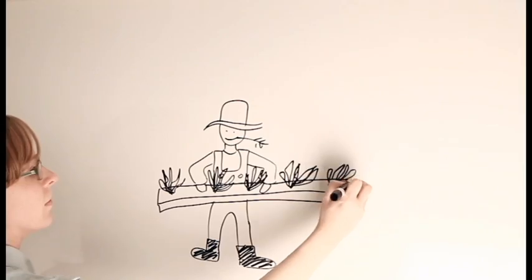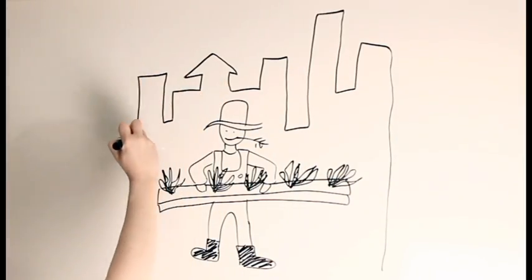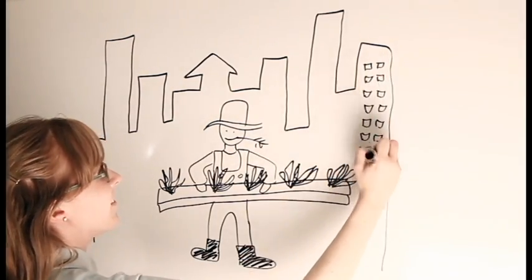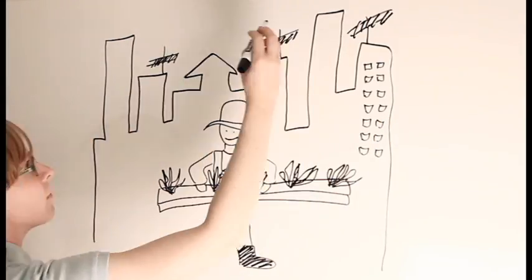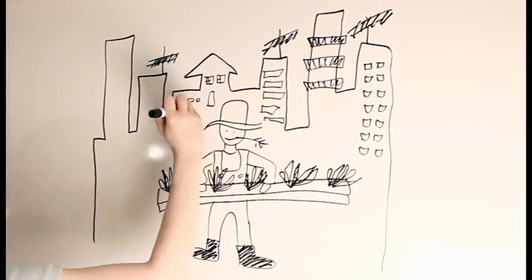In this scenario, Farmer Joe probably isn't out in the middle of nowhere. He's probably somewhere near a city full of hungry people who really want to buy Farmer Joe's produce. Heck, maybe Farmer Joe is even in the city. How's that for crazy ideas?